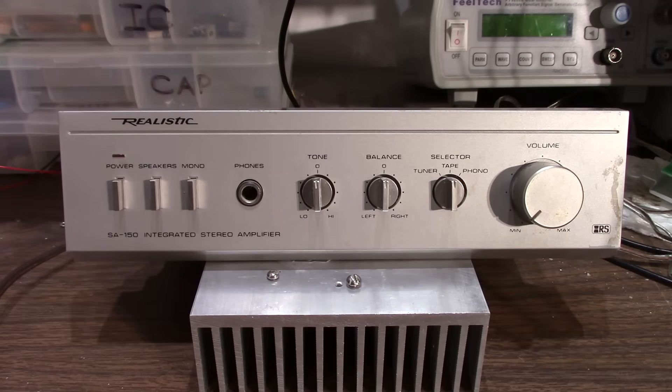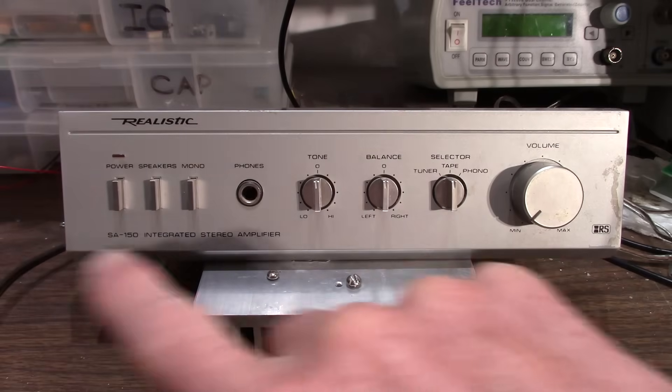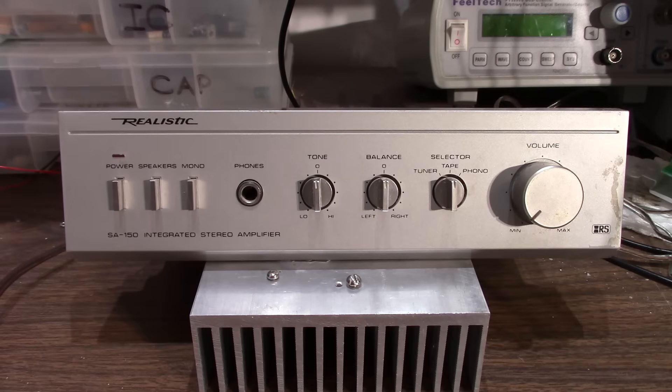This particular model was available from mid-80s to mid-90s I think. After that they came out with the SA-155 which is pretty much the same amplifier but they modernized it and it had a black front. But Radio Shack always carried a budget integrated amplifier like these over several years because they're really popular with the customers, because many people don't want to spend a lot of money on a stereo system. They just want something for background music.